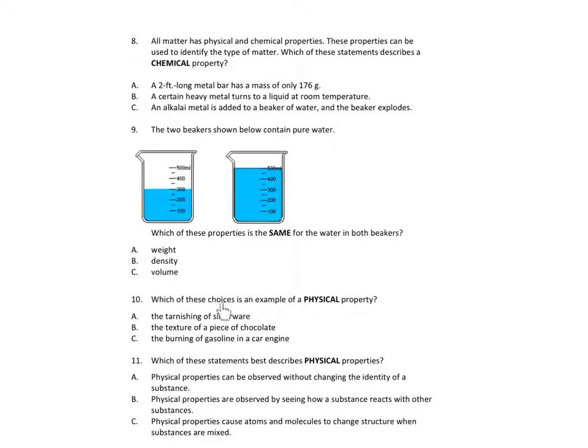Number 10. Which of these choices is an example of a physical property? A. The tarnishing of silverware. B. The texture of a piece of chocolate. C. The burning of gasoline in a car engine.